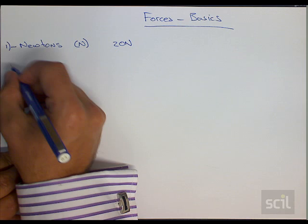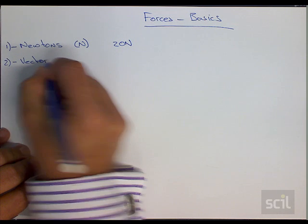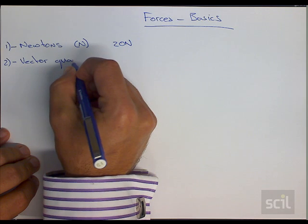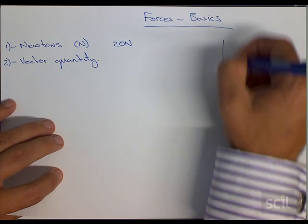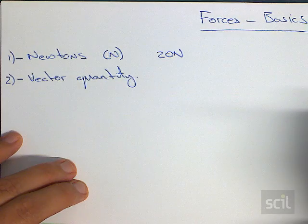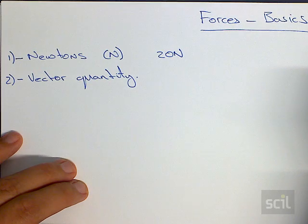The second thing that we need to know about a force is that it is a vector quantity. Now we remember there are two types of measurements or quantities that we have in engineering. We have scalars,